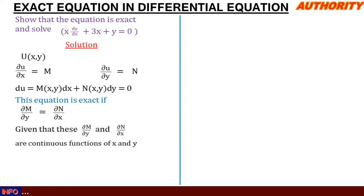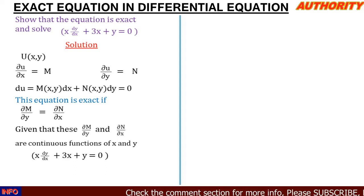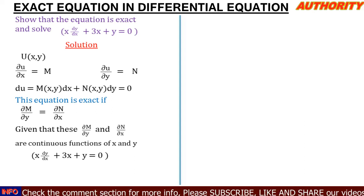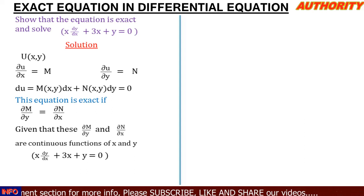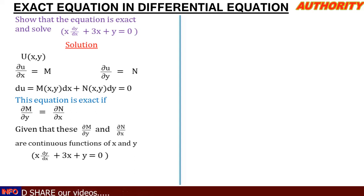Given that these two partial derivatives are continuous functions of x and y, let's proceed. The equation given is x dy/dx plus 3x plus y equal to zero. We need to identify the part having dx and the part having dy — we call them M and N respectively. But here we only see dy/dx, so we multiply through by dx.